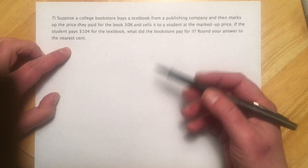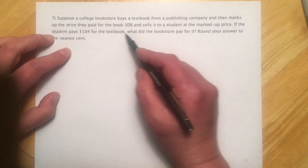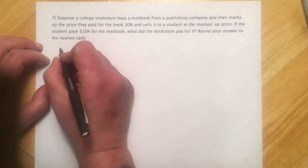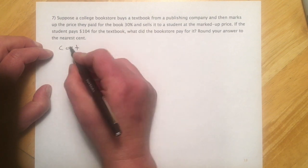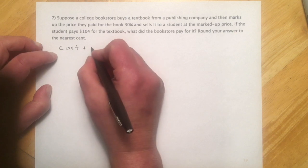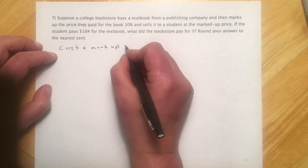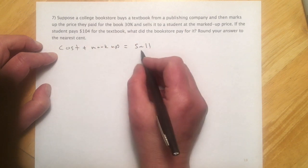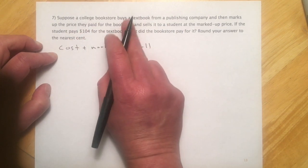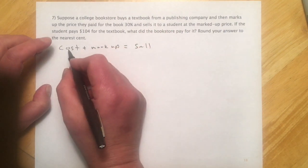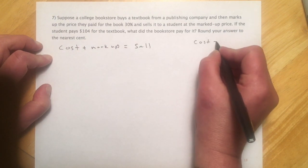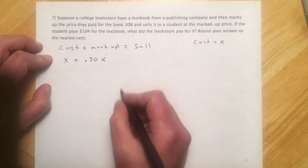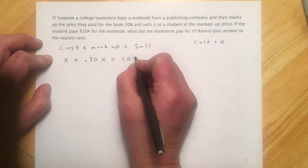Suppose the college bookstore buys a textbook from a publishing company and then marks up the price they paid for the book 30%, sells it to the student at the marked up price. If the student pays $104, what did the bookstore pay? So the bookstore has some cost. And then they're going to take 30% of this cost. That's going to be their markup. And then that's going to equal their sell price. So cost plus however much the markup makes sell. We know the sell, that's $104. We know the percentage of the markup, it's 30%. And we don't know the cost. So I'm going to let cost equal x. And then the markup is going to be whatever that cost was, 30% of that. So I'm going to say x plus 0.30x equals my sell of $104.